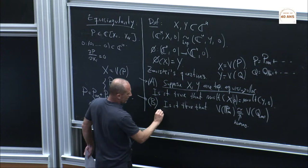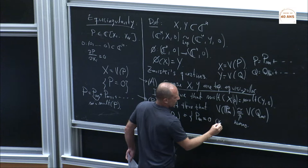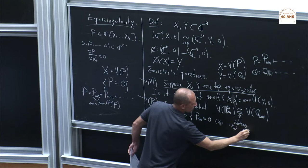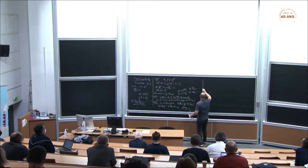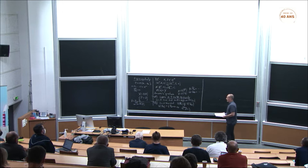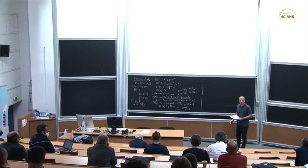V(p_m) is the equation p_m equals zero, but in projective space. These are the questions we are going to analyze in this lecture. They have a long history and there are many good surveys on that, so I'll just go to the point.